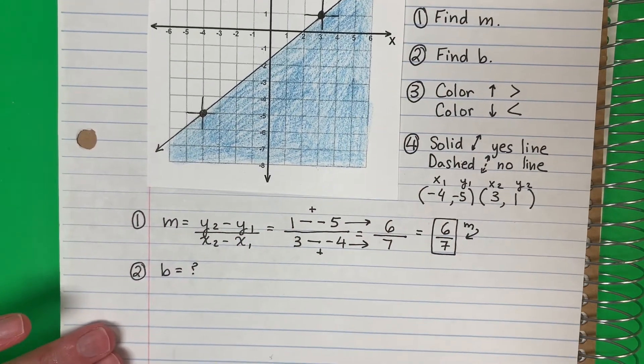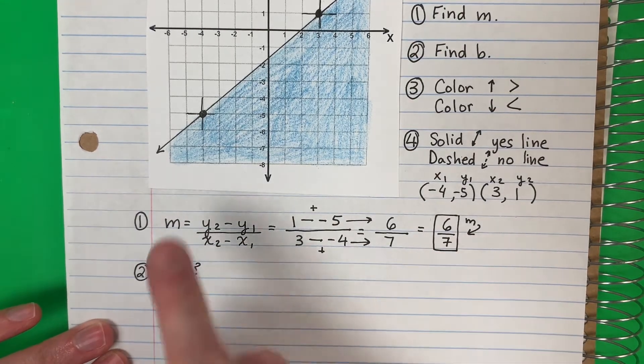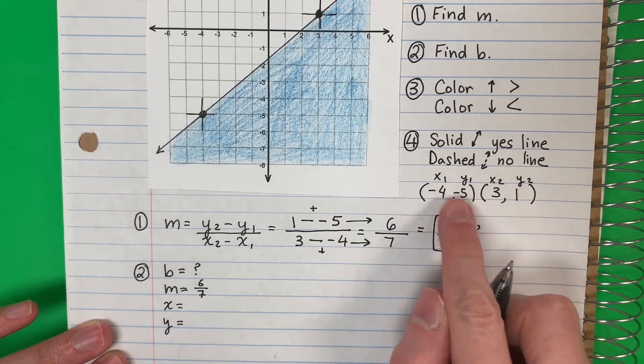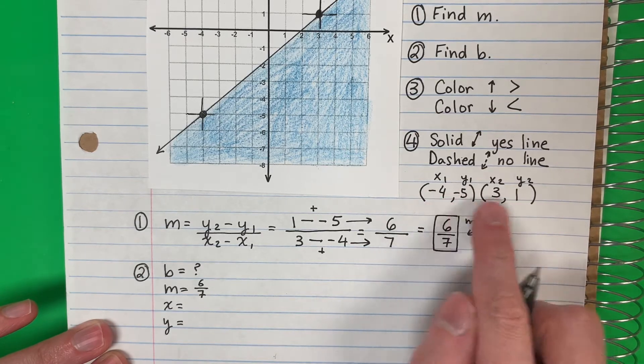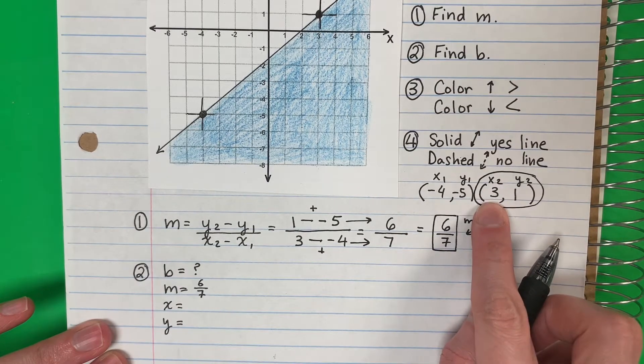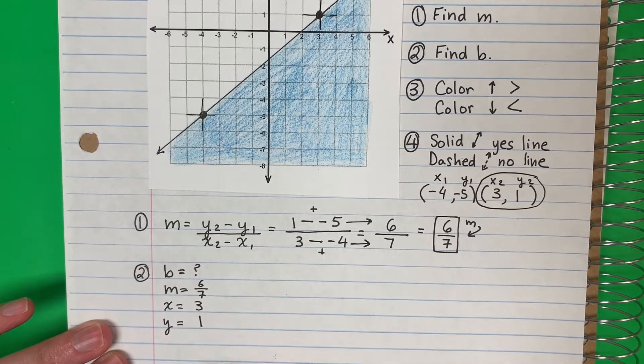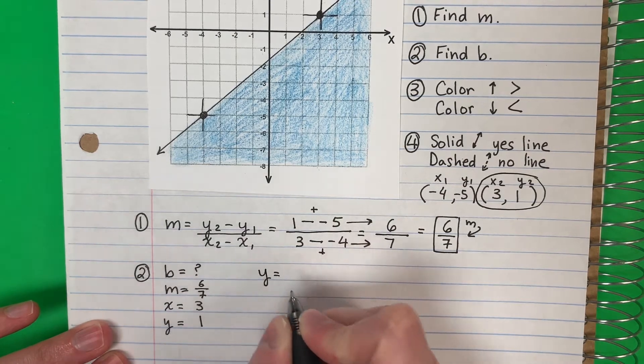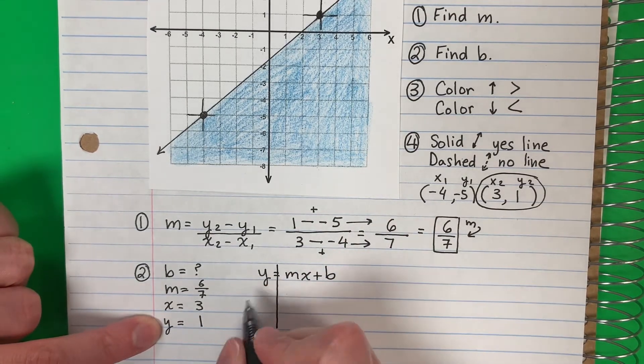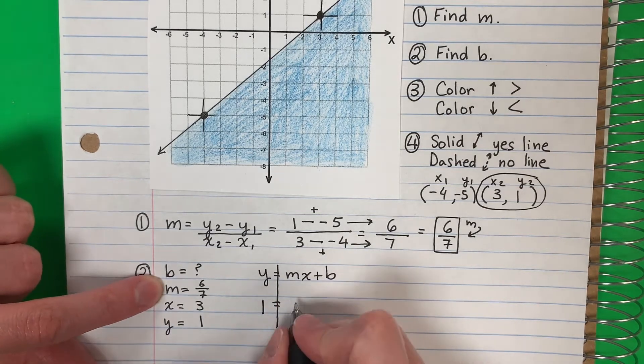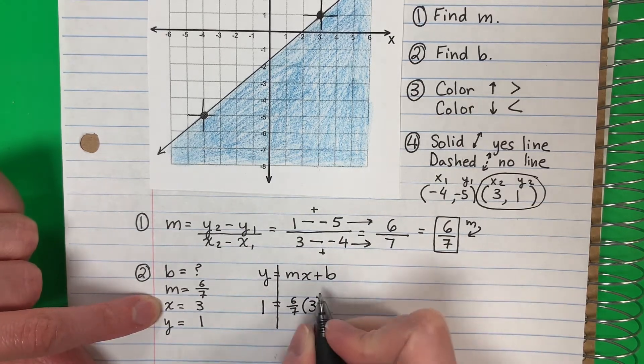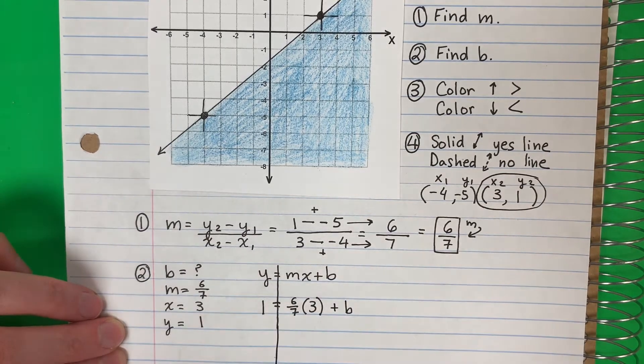b I don't know what it is, no sé qué es, but I can find it. m is six sevenths and I'm gonna need x and y, and I'm gonna use one of these - it doesn't matter which one. I want number two, numero dos. So my x is 3 and y is 1. I will use the formula slope intercept form: y equals mx plus b. So y I'm gonna put 1, equals m is six sevenths, x is 3 in parentheses, plus b.